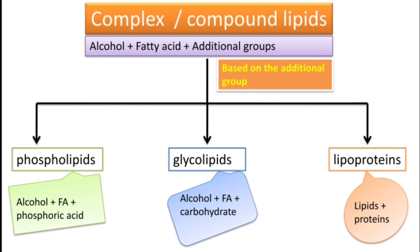Coming to the second group of lipids, that is complex or compound lipids — their composition is alcohol plus fatty acid plus additional groups. Based on the type of additional group, these compound lipids are subclassified into phospholipids, glycolipids, and lipoproteins. The additional group is phosphoric acid in phospholipids, carbohydrate in glycolipids, and proteins in lipoproteins.